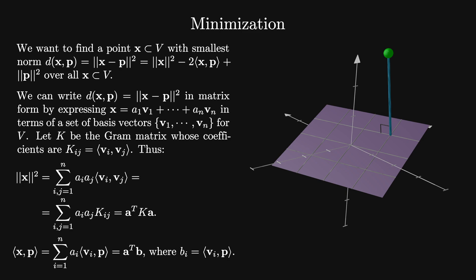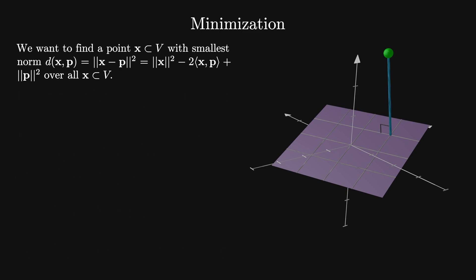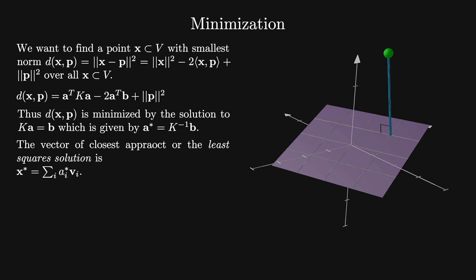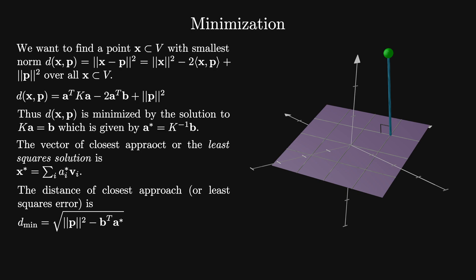Combining this together, d equals a^T K a minus 2a^T b plus the squared norm of p. This can be minimized by solving the linear equation K a equals b, or a* equals K inverse b. The vector of closest approach, called the least squares solution, is x* equals the sum on i of a*_i v_i. Then the distance of closest approach is d_min, which equals the square root of the squared norm of p minus b^T a*.